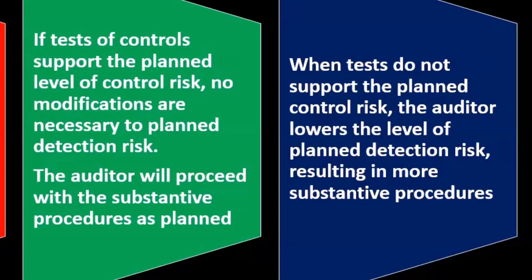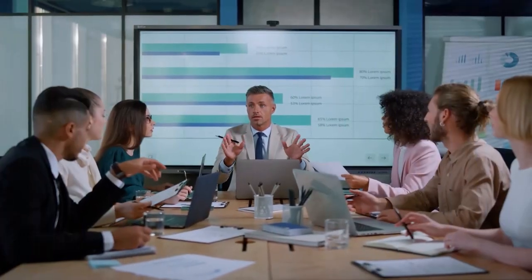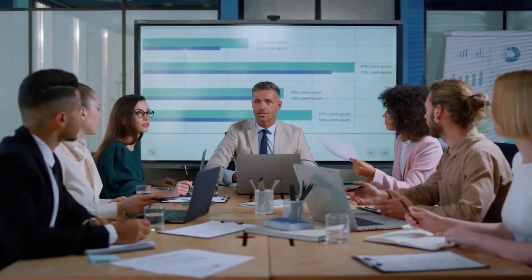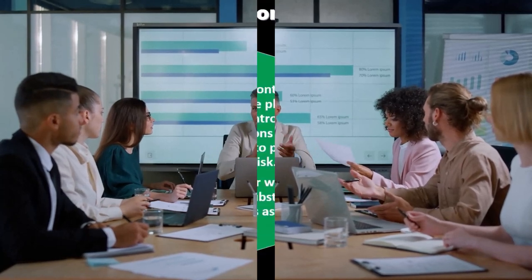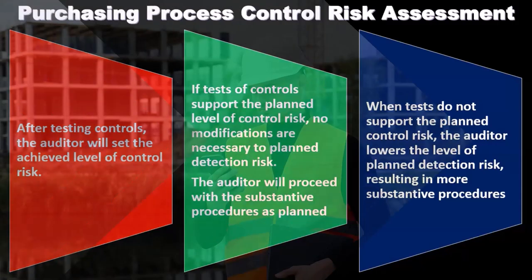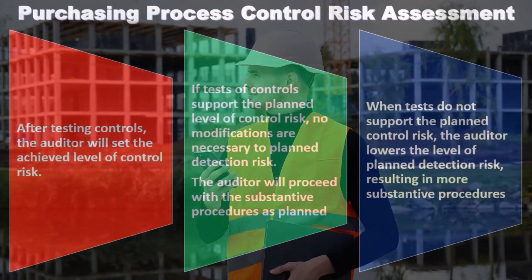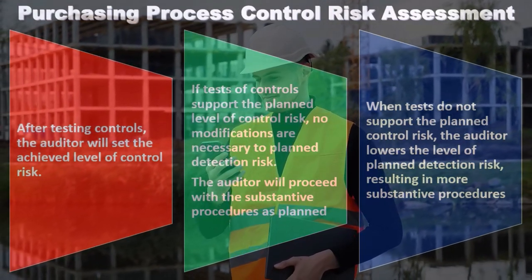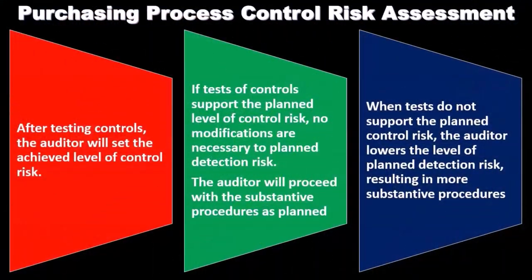When tests do not support the planned control risk — if we test the controls and they are below what we expect — the auditor lowers the planned level of detection risk. Control risk is the risk that problems will not be detected by the internal controls that are set up. If we cannot rely on the internal controls, the risk that the controls are weak is going to be higher.